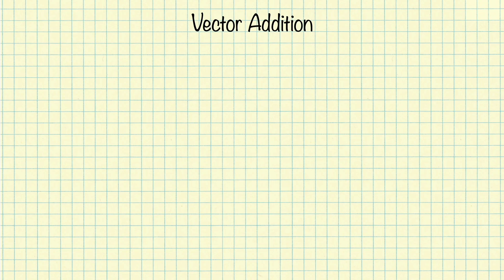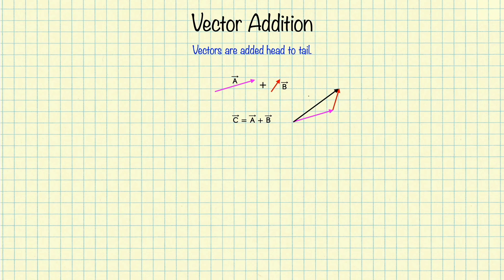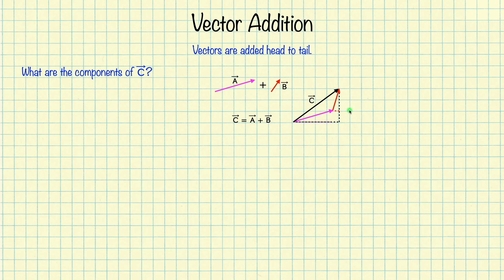So how do we add vectors? Remember, vectors are just arrows. The way we add them is to place the arrows head to tail. Let's say we have a vector a and we want to add it to a vector b, and we're going to call the resultant vector c — so c equals a plus b. We place the two vectors head to tail, then draw an arrow from the starting point to the end point, and this is our resultant vector c. Now, assuming we know the components of a and b, what are the components of our new vector c? The x component of c is equal to the x component of a plus the x component of b. And similarly, the y component of c equals the y component of a plus the y component of b. So the rule for vector addition is: you add the components separately.